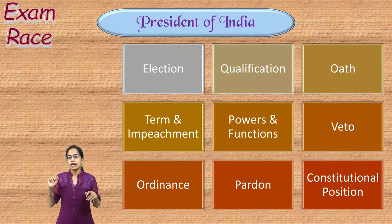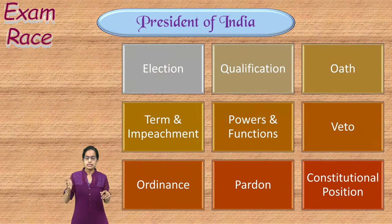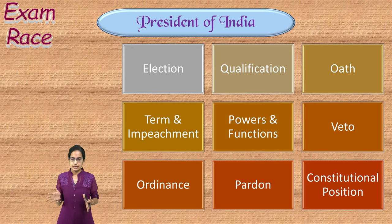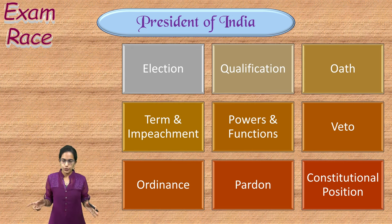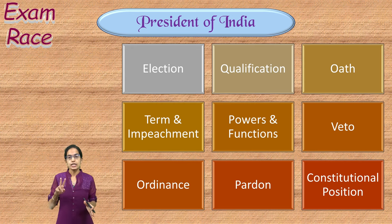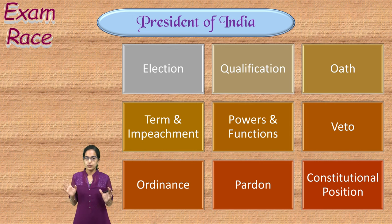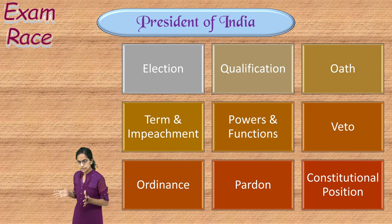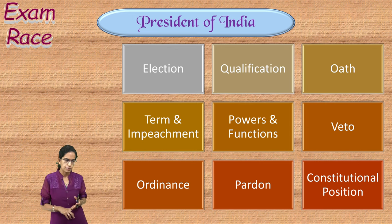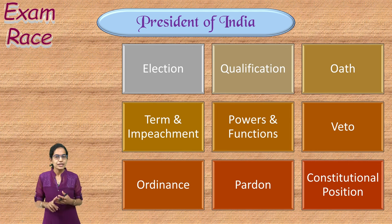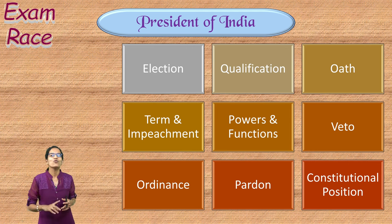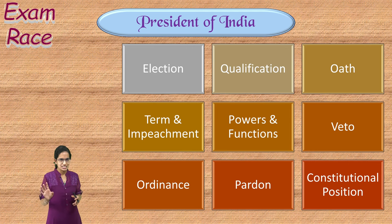The first citizen of India is the president. Key topics include how the president is elected, qualifications, oath, duration, and two important concepts: veto powers and pardon powers. The president is known for discretionary power.